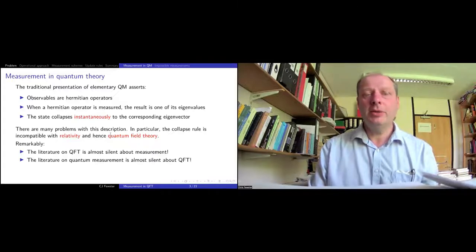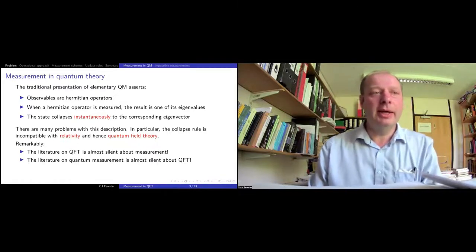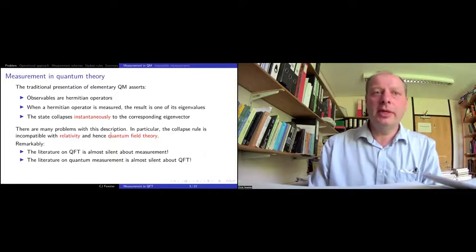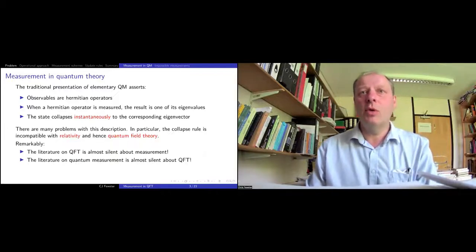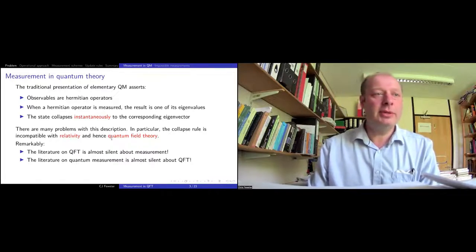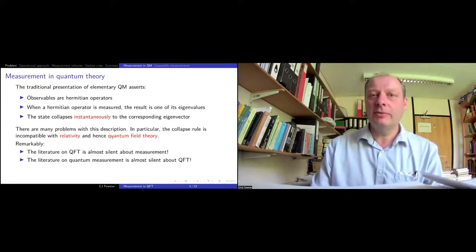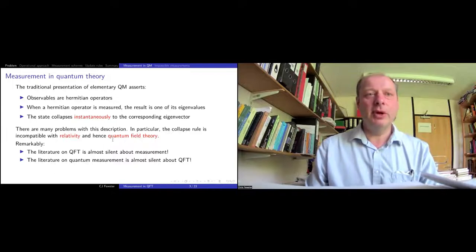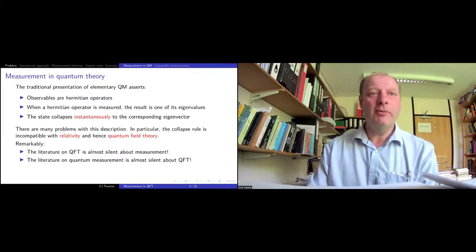Since the collapse rule is incompatible with relativity, it's also incompatible with quantum field theory. It is quite remarkable that when you look at the literature, you find that the literature on quantum field theory is almost silent on the question of measurement. Moreover, the literature on quantum measurement is almost silent about quantum field theory. So these two communities have barely talked to each other over the decades, despite obvious requirement to do so.